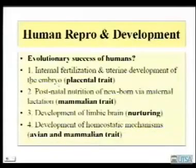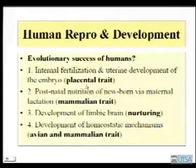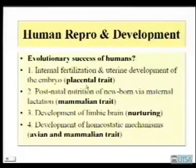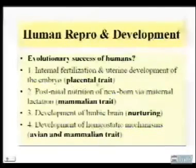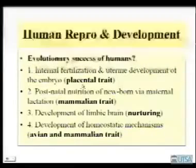Human reproduction and development has a lot to do with the evolutionary success of humans, related to internal fertilization and the intrauterine development of the embryo. Humans are viviparous, and there is intrauterine development. We also have a unique kind of placenta with a hemochorion — open blood lakes in the human uterus, the endometrium, with the implantation of the embryo.